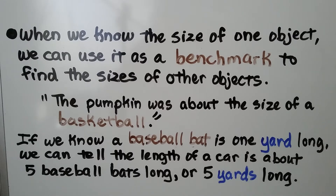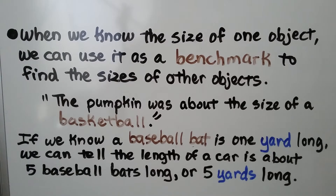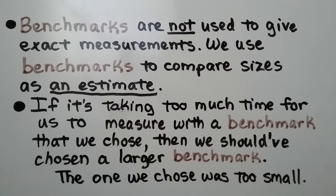When we know the size of one object, we can use it as a benchmark to find the sizes of other objects. When a pumpkin is about the size of a basketball, you can imagine how big a basketball is, and then you can imagine how big the pumpkin is. If we know a baseball bat is one yard long, we can tell the length of a car is about five baseball bats long, or five yards long. Benchmarks are not used to give exact measurements — we use benchmarks to compare sizes as an estimate. If it's taking too much time to measure with a benchmark we chose, then we should have chosen a larger benchmark; the one we chose was too small.